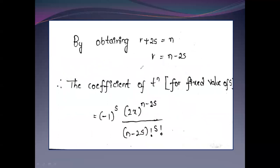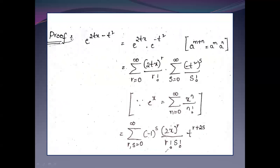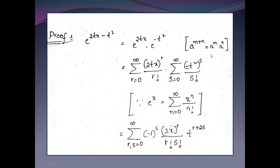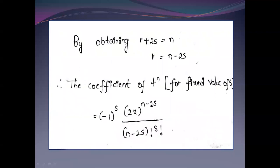Since the power of t is r plus 2s, we let r equal n minus 2s, so that t^(r+2s) becomes t^n. From the previous expression we have (−1)^s times (2x)^r divided by r factorial times s factorial, and t^(r+2s). We now collect the coefficient of t^n by summing over the appropriate values of s.